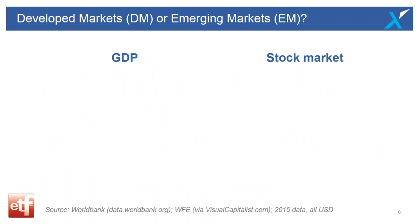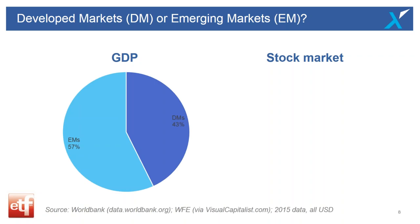Where should we invest — developed markets or emerging markets? When researching this presentation, I was still assuming the majority of the world is developed markets. But 57% of global GDP is actually emerging markets, with only 43% from developed markets, according to the World Bank as at end of 2015. Eighteen months on, the picture has moved even further in favour of emerging markets, with a shrinking contribution from developed markets.